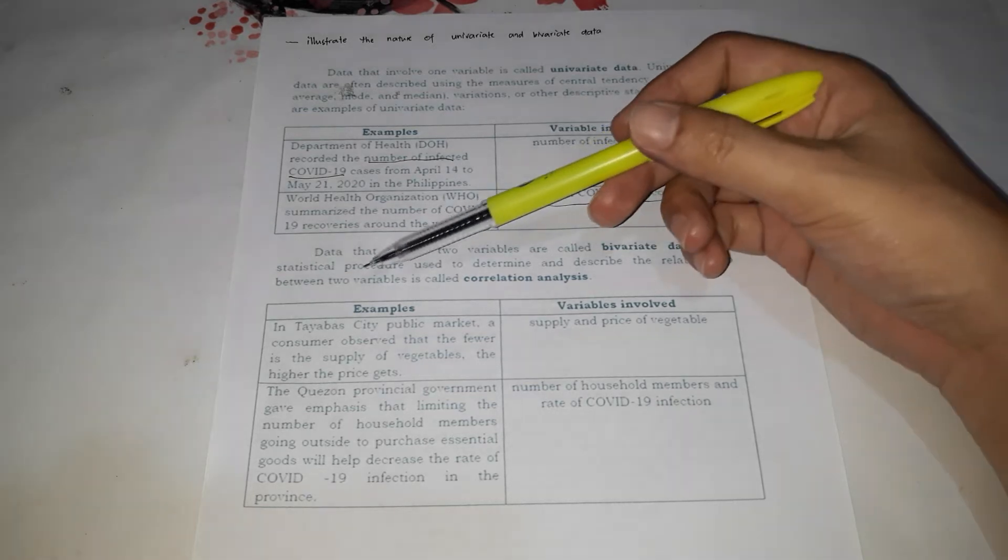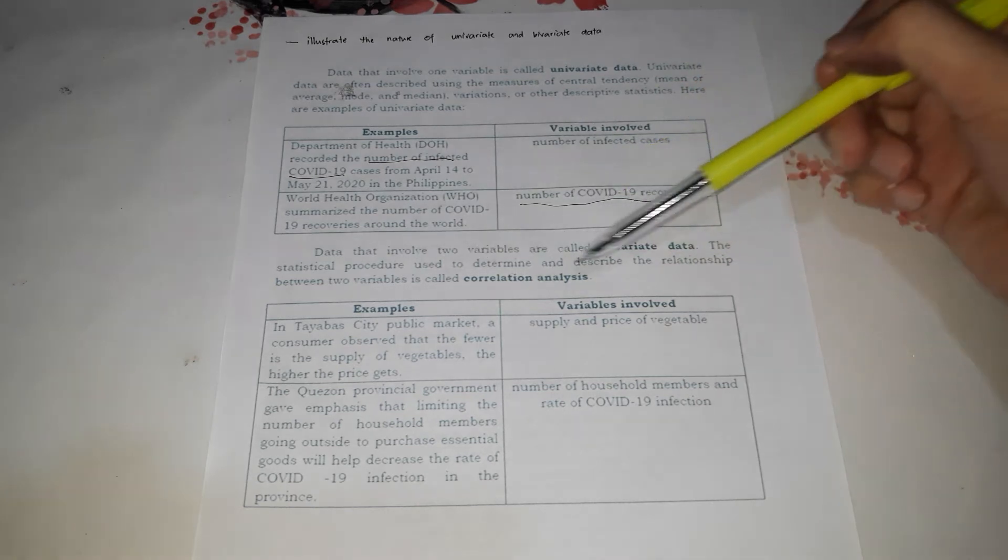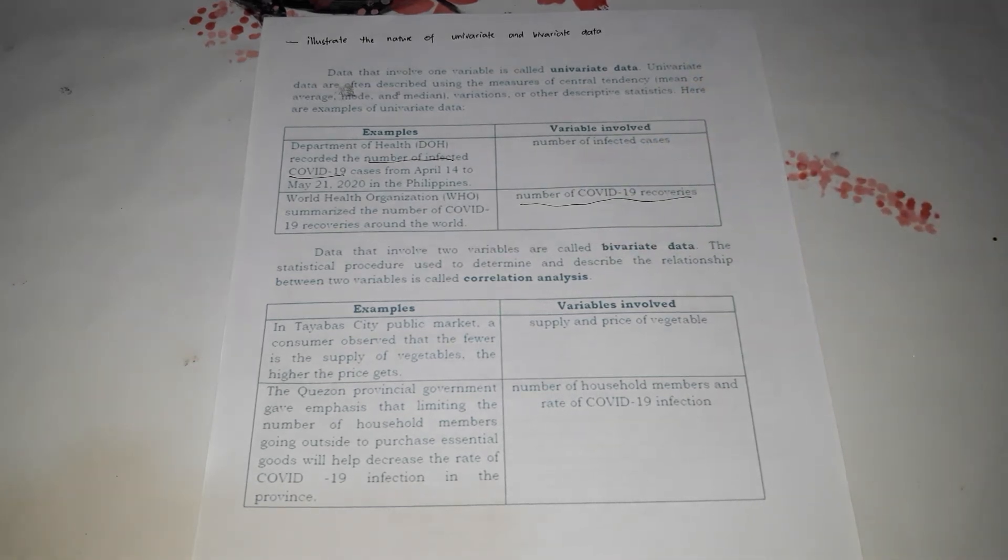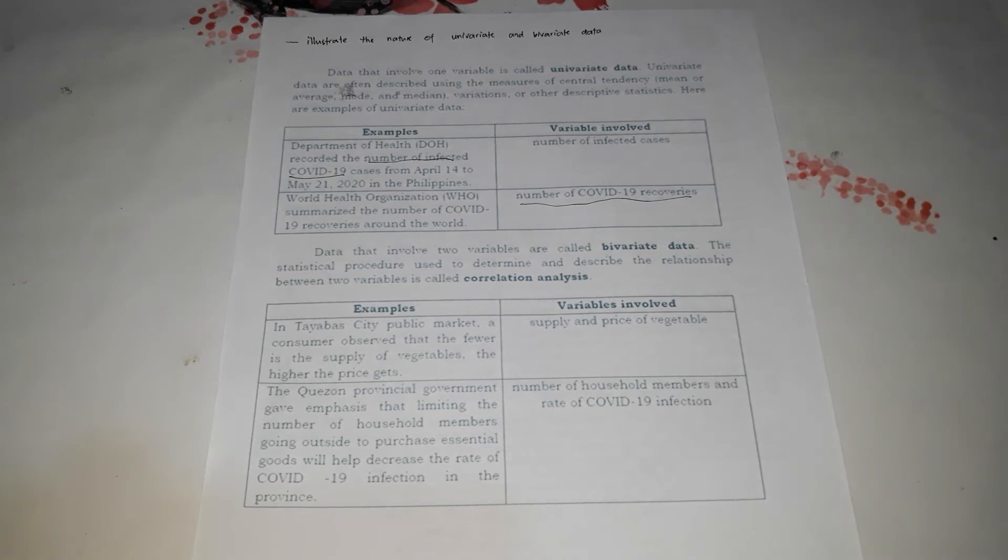What happens if there are two variables? Data with two variables is called bivariate data. The statistical procedure used to determine and describe the relationship between these two variables is called correlation analysis. So when you have bivariate data, the statistics you will typically use is correlation analysis.